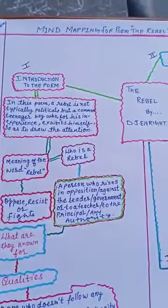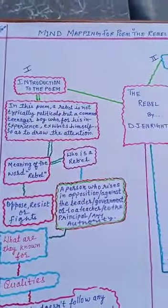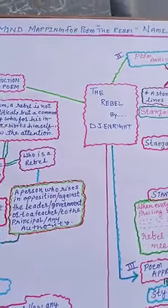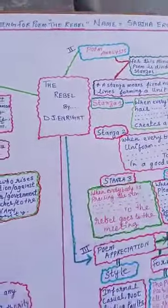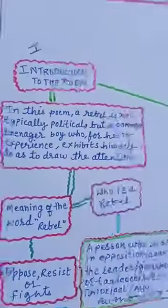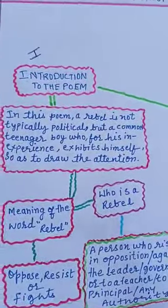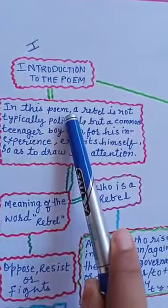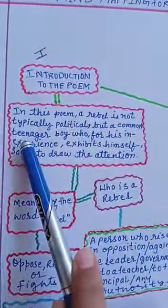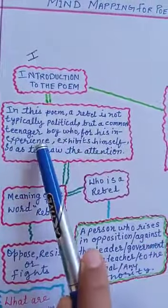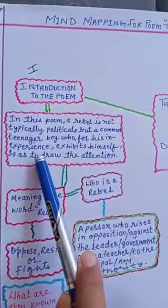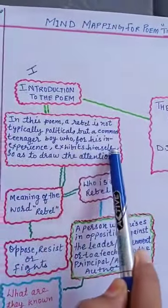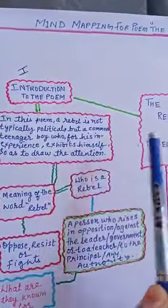Good morning everyone. I am Sabi Hiram, showing a mind map for the poem 'The Rebel' by D.J.N. Wright, who is a poet. In this poem, a rebel is not typically political, but a common teenager boy who, for his inexperience, exhibits himself so as to draw the attention.